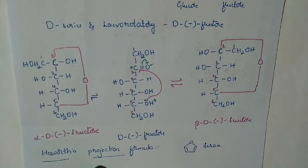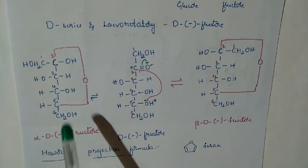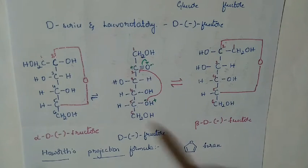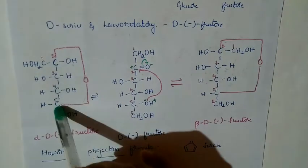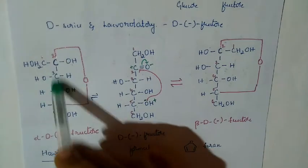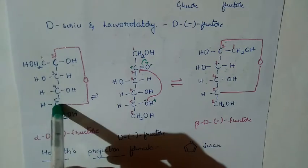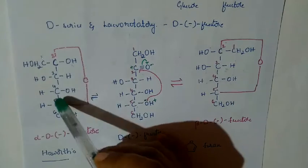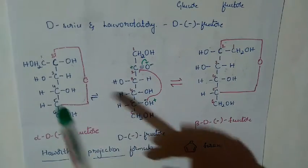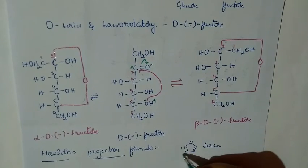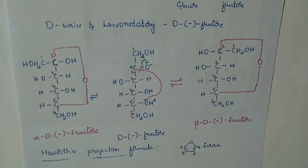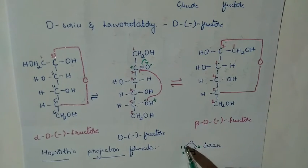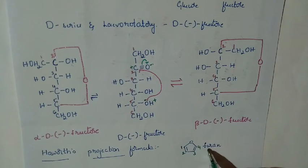Now we are going to discuss the Haworth projection formula of fructose, which resembles a furan ring. You can observe 4 carbon atoms bonded through oxygen — the first and the fourth are bonded through an oxygen atom. So the name of this compound is furan, a cyclic four-membered ether. This structure is written in the form of furan and that is what we call the Haworth projection formula.